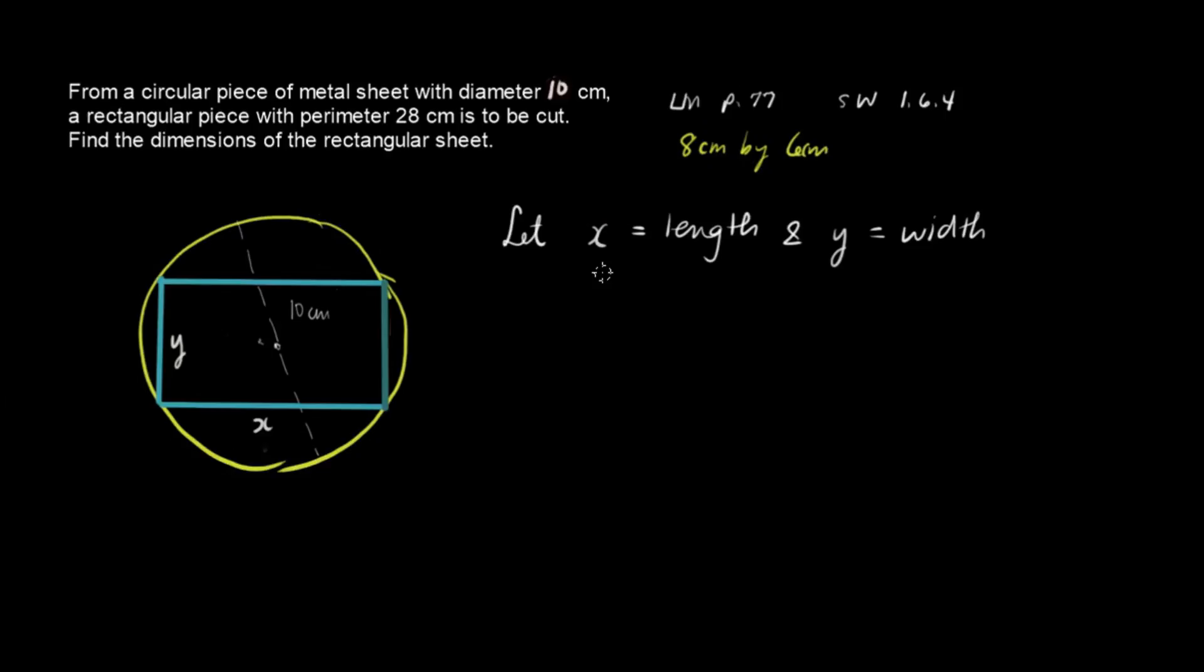And then the perimeter is equal to twice the length plus the width, the sum of all of these, right? This is y also and this is x. So the sum is 28.